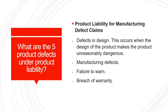What are the five product defects under product liability? Product liability claims include defects in design — which occur when the design makes the product unreasonably dangerous — manufacturing defects, and failure to warn or breach of warranty.